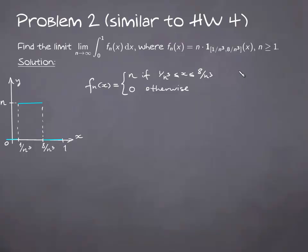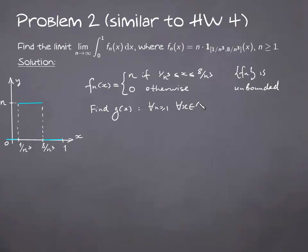The first observation is that the sequence of integrands is actually unbounded, since n goes to infinity as n goes to infinity. Therefore, we cannot use the bounded convergence theorem. Let's try to apply the dominated convergence theorem. In this case, we need to find some function g(x) such that for every n and every x from the interval 0 to 1, fn(x) is dominated by g(x) above and bounded below by 0.